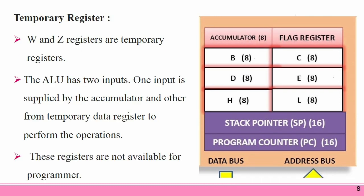Temporary Registers: Temporary registers are used to hold data temporarily during the execution of a program. In the 8085 microprocessor, there are 3 eight-bit temporary registers. One register is used during calculation time. The other temporary registers, W and Z, are used to hold data or address temporarily during execution of some instructions. These registers are not available to the programmer, but the processor uses them internally.